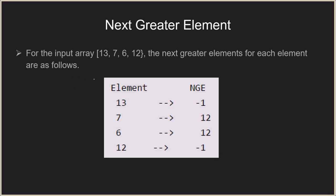Let's see another example with the array [13, 7, 6, 12]. The next greater element for 13 is minus 1 because all of the next three elements are smaller than 13. Coming to 7, the next greater element will be 12. Coming to 6, the next greater element will also be 12. Finally, the next greater element for 12 will be minus 1 because it is the rightmost element.